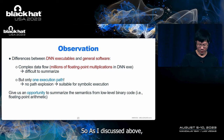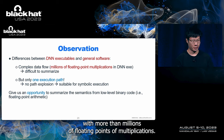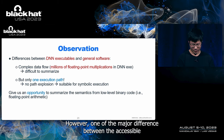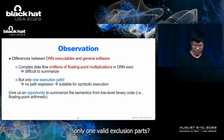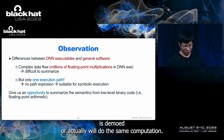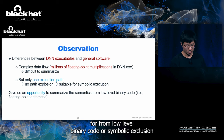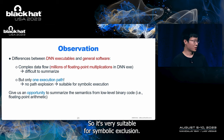DN executables usually have a very complex data flow with more than millions of floating-point multiplications, making analysis quite difficult. However, one major difference between DN executables and traditional software is that DN executables have only one valid execution path — no matter what the input is, the DN model will do the same computation. This gives us an opportunity to summarize the semantics from low-level binary code with symbolic execution, because there is no path explosion problem, making it very suitable for symbolic execution.